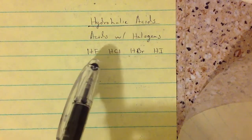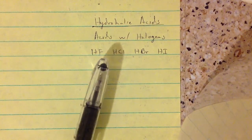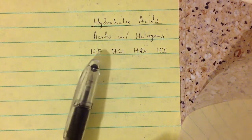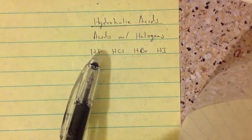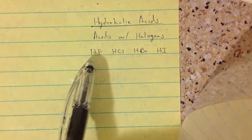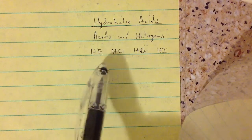So fluorine is the most electronegative atom. So since that's true, that's going to be a really strong bond. So if this is really strong, it's not going to want to break up into ions.